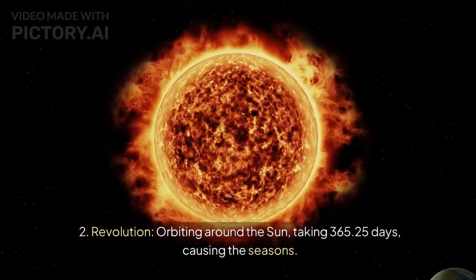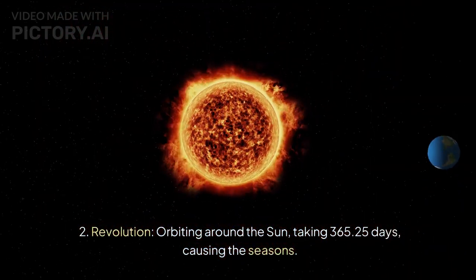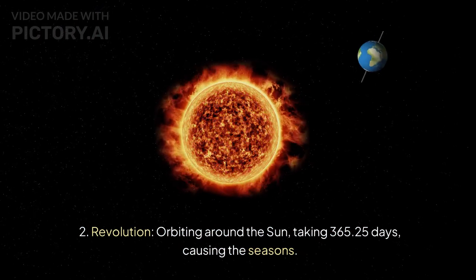Revolution - orbiting around the sun, taking 365.25 days, causing the seasons.